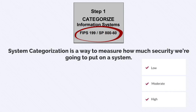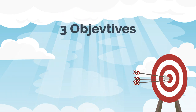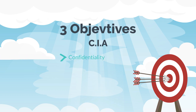Feel free to review those documents for granular details, but I'm going to give you the gist of it. There are three objectives to focus on in order to determine a system category. They are called CIA — and no, I'm not referring to the Central Intelligence Agency. I'm talking about confidentiality, integrity, and availability.